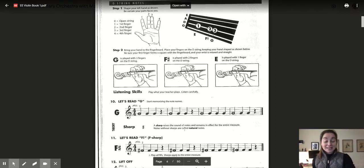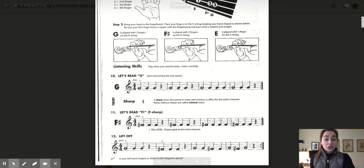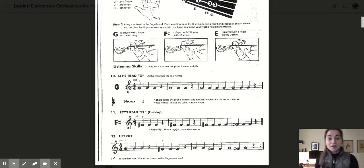And as we go through the exercises 10, 11, and 12, you'll see that they have the numbers above the notes. So if you look closely at, let's read G, you can see a three above the G. That means three fingers on D string. So make sure you have three fingers on the tape.